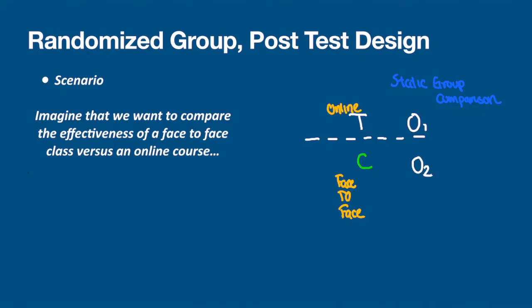Here's where things become more interesting. For true experimental designs, we include the letter R, which represents randomization — both random selection and random assignment to both groups. We simply place an R at the beginning of each group. This gives us the opportunity to compare whether our treatment, the online class, differs from the face-to-face class. We've made the study better by adding randomization, ensuring that our groups are diverse so the characteristics of the group don't impact the outcome.